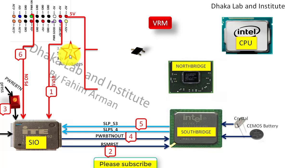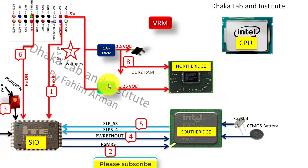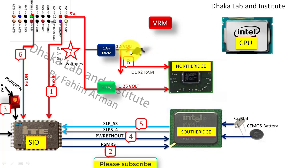First, 5V will pass from the 5V rail — it will first go to the RAM section. As this is a DDR2 RAM board, the RAM section will provide 1.8V. Then the 5V will also enter a linear regulator, where it is converted into 1.25V, and that 1.25V will go into the North Bridge.